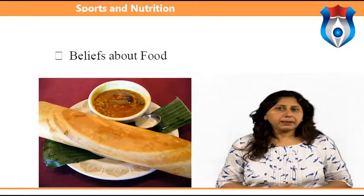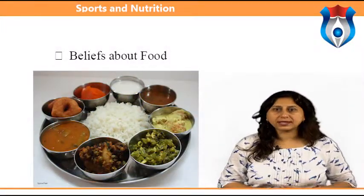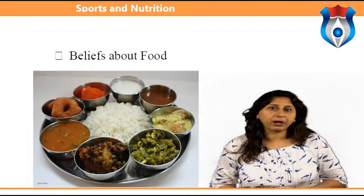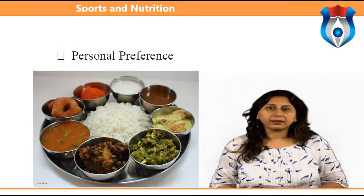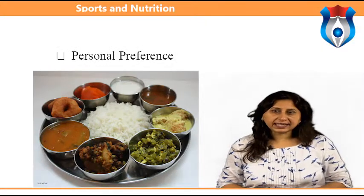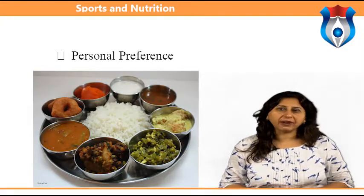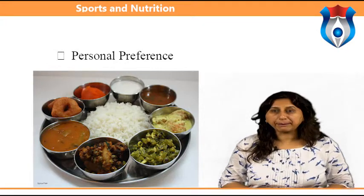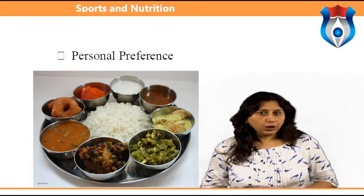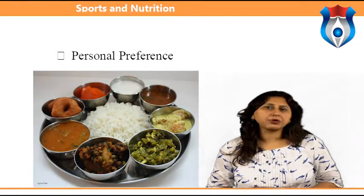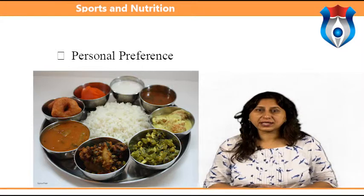Beliefs about food: beliefs about effects of food on health and well-being can affect food choices, and many people acquire these beliefs from television, magazines and other media. Personal preference: people develop likes and dislikes based on associations with typical food — a child who loves visiting grandparents may love pickled crab apples because they are served there, while another child who dislikes a strict aunt may grow up to dislike the chicken casserole she often prepares. People often carry such preferences into adulthood.